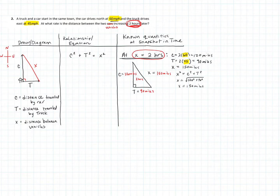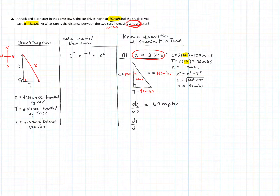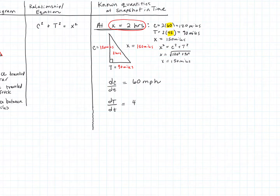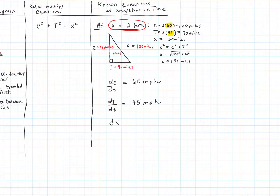The given speeds are also rates we can express in terms of our variables. dC/dt — the rate of change of the car's distance over time — is 60 miles per hour. dT/dt — the rate of change of the truck's distance with respect to time (capital T for truck, little t for time) — is 45 miles per hour. The unknown we want to find is dX/dt at t = 2 hours.